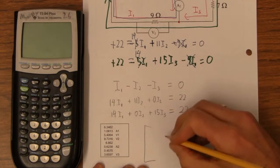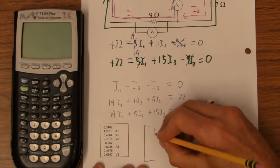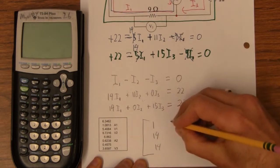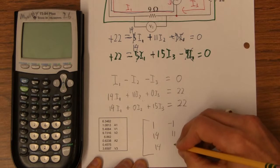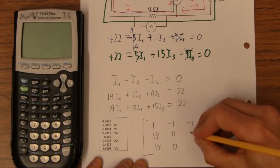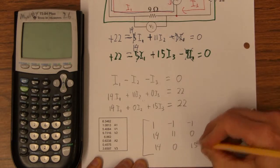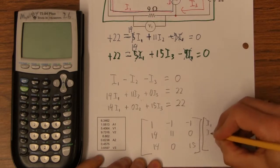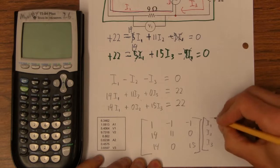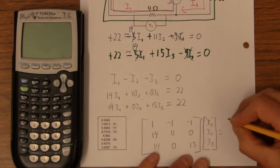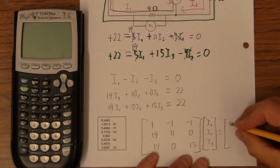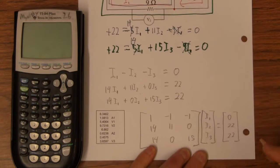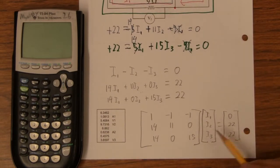I can represent this system of equations as this matrix: 1, -1, -1; 14, 11, 0; 14, 0, 15. Then that is times I₁, I₂, I₃ equals 0, 22, 22.